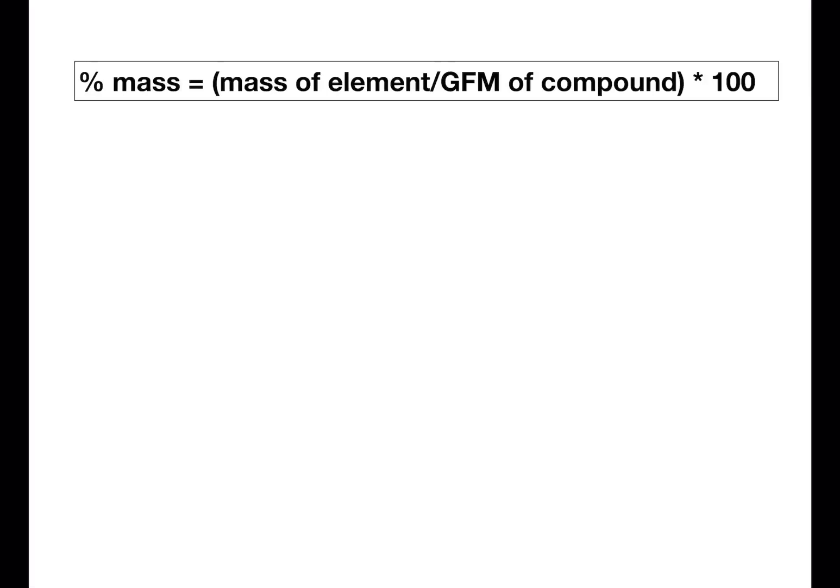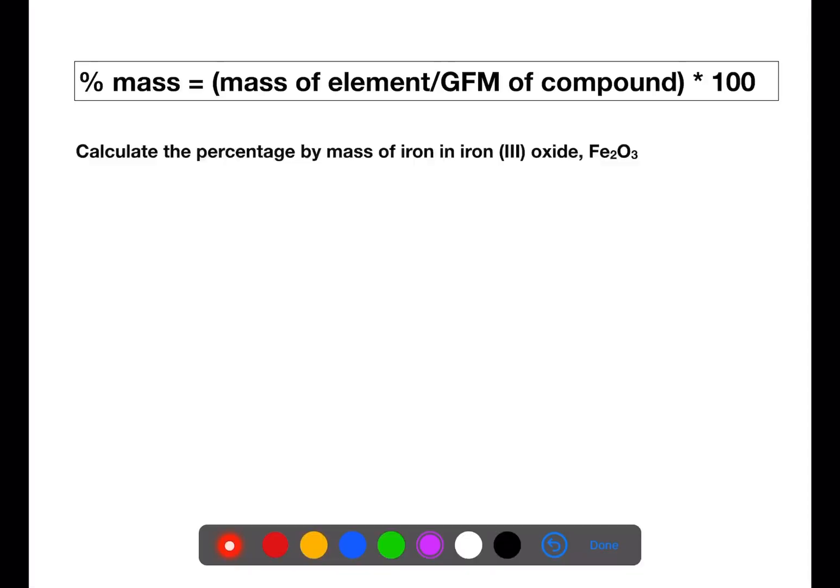When calculating percentage by mass of an element, you need to know the mass of the element and the gram formula mass of the compound, taking care if there is more than one atom of the element present within the compound.